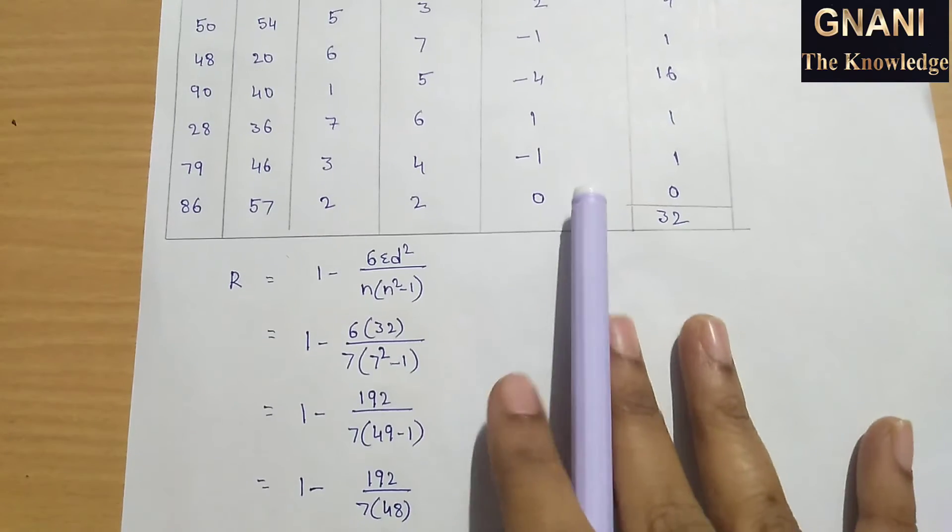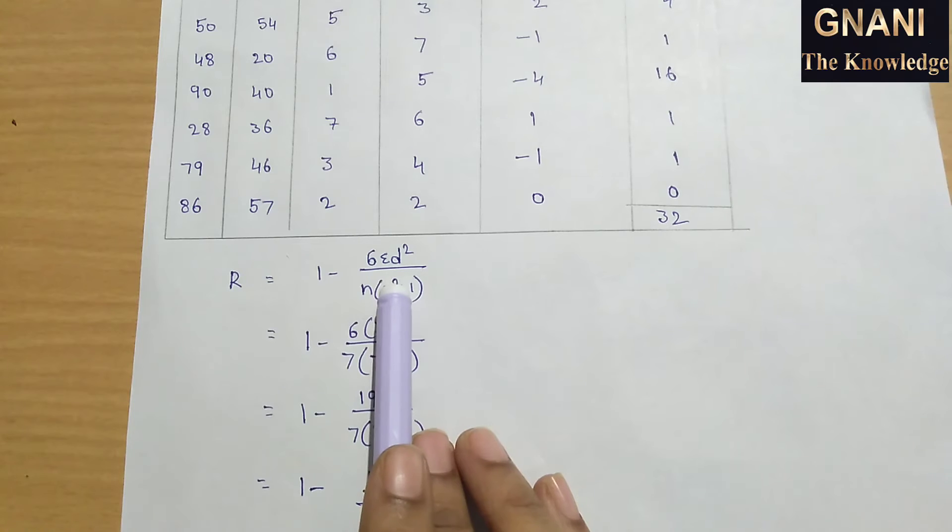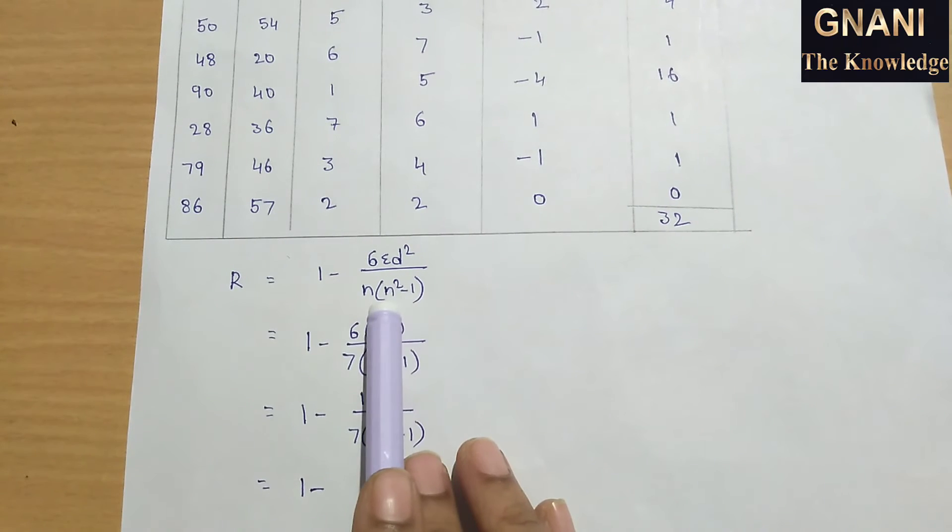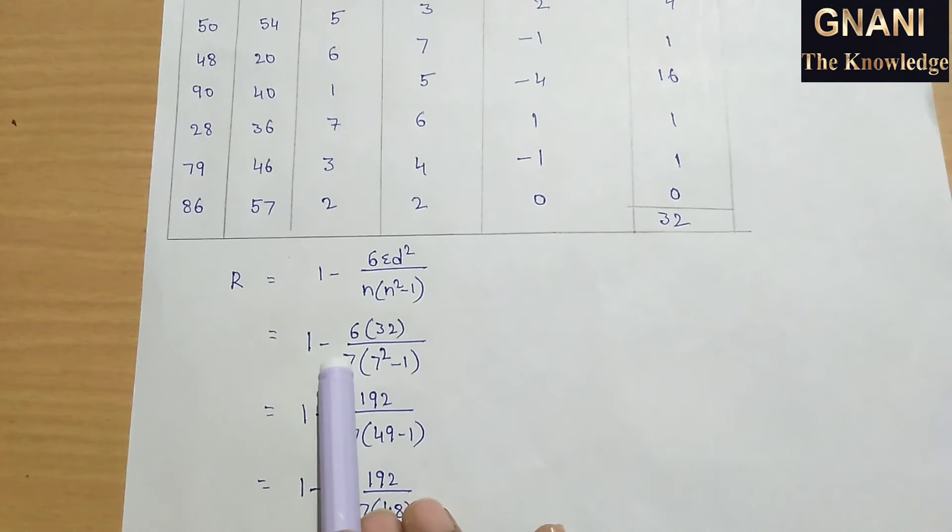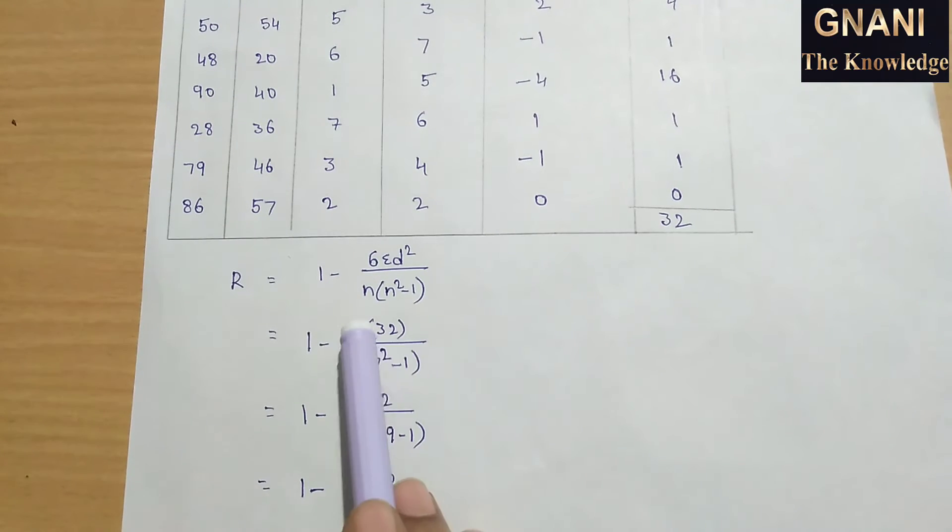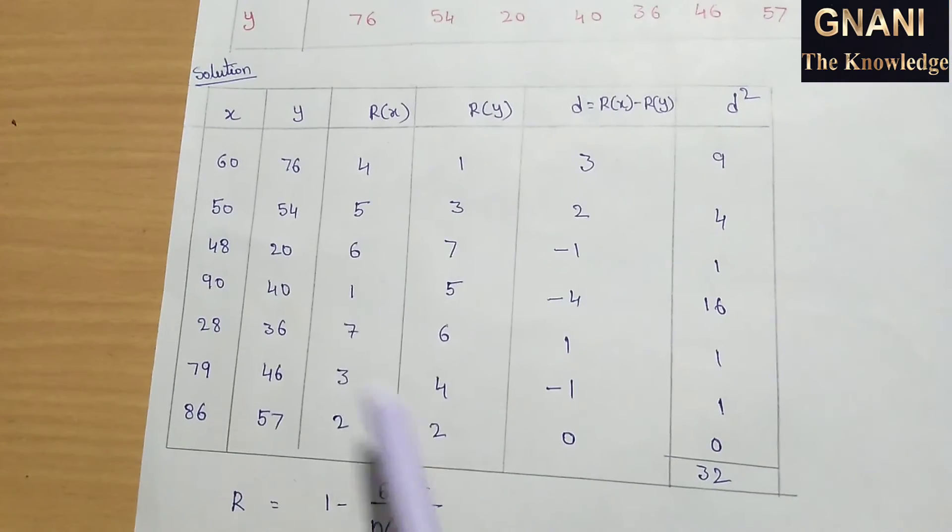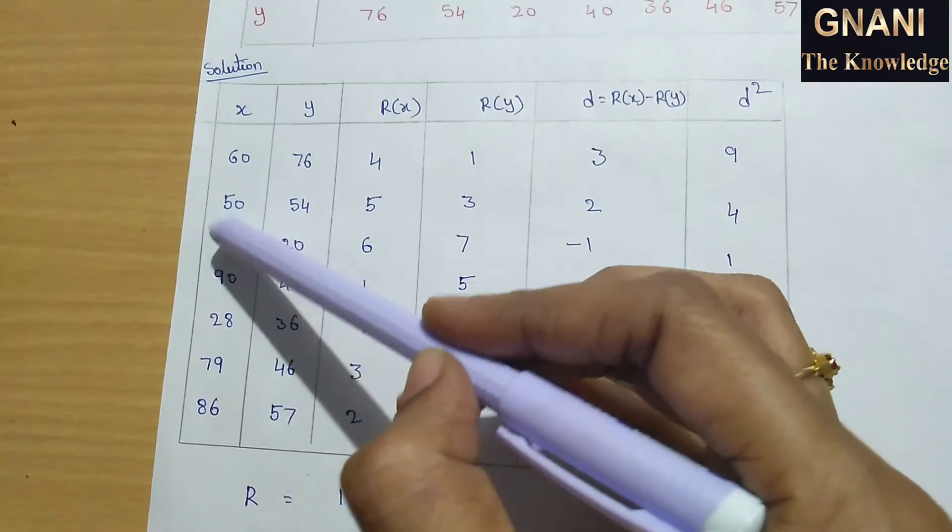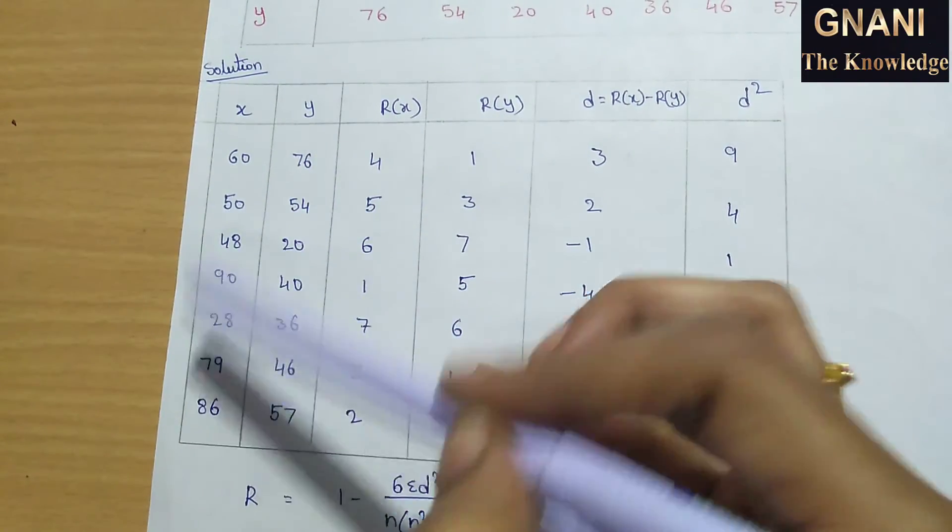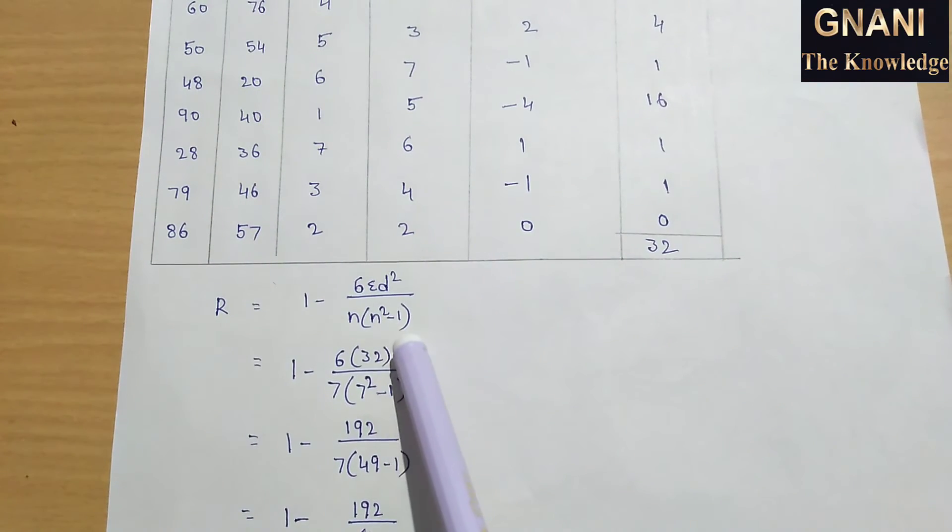Now calculate using the formula: R is equal to 1 minus 6 summation d square by n into n square minus 1. Here, 1 minus 6 into 32 by n into n square minus 1. n means number of observations, which are 1, 2, 3, 4, 5, 6, 7. So 7 observations, n into n square minus 1 is 7 into 7 square minus 1.